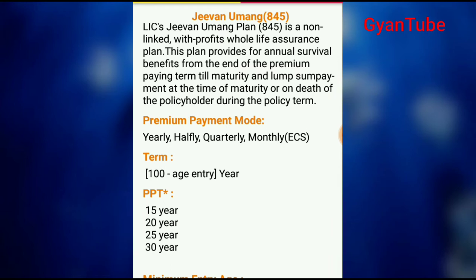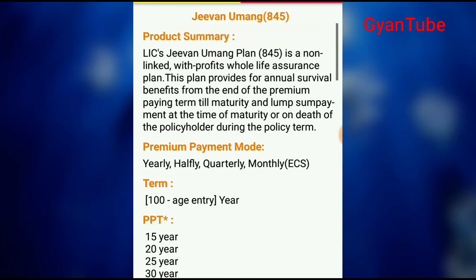LIC Jeevan Umang table number 845 is a non-linked with-profit life assurance plan. This plan provides for annual survival benefit from the end of the premium paying term till maturity, and a lump sum payment at the time of maturity or death of the policyholder during the policy term. This plan is a whole life assurance plan.